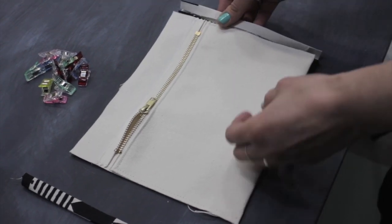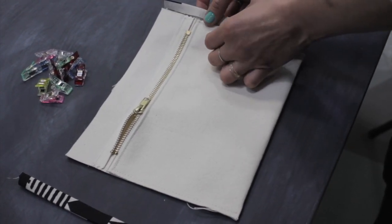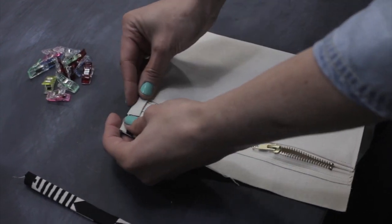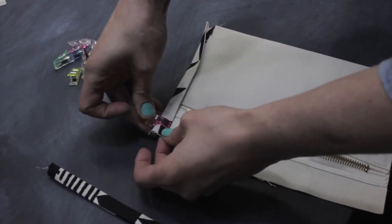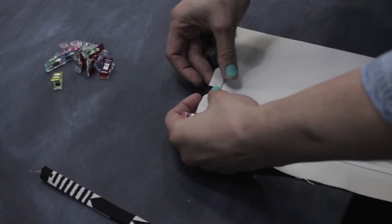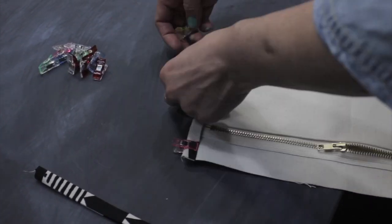Now we're going to clip this seam binding tape onto the edges of the inside pocket, making sure that the pocket is seated all the way into the seam binding tape.